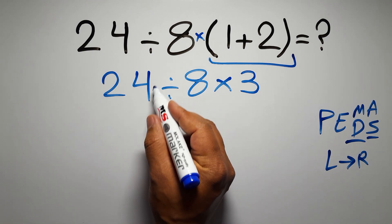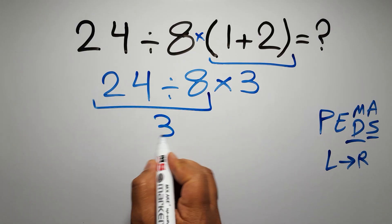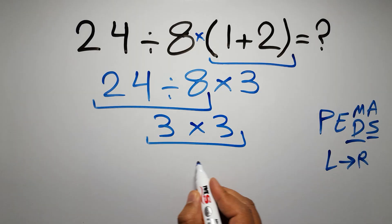So, here first we have to do this division. 24 divided by 8 gives us 3, and 3 times 3 equals 9.